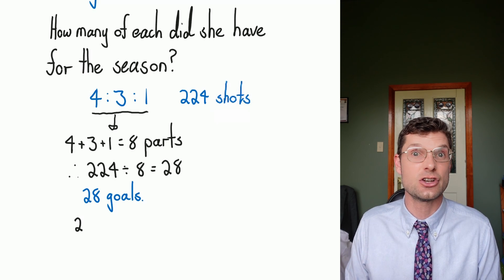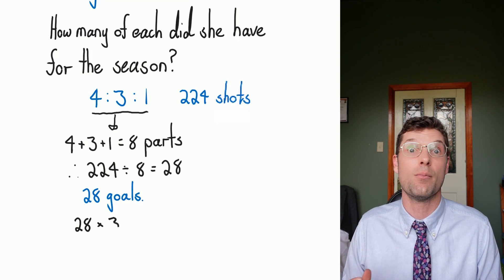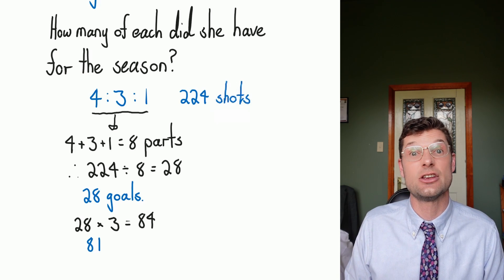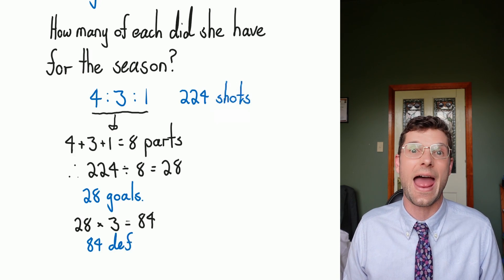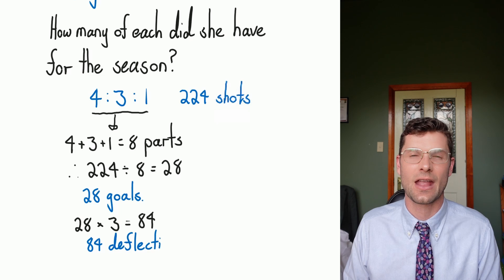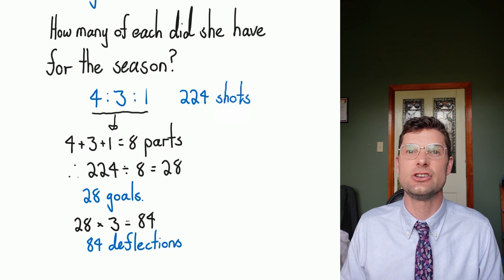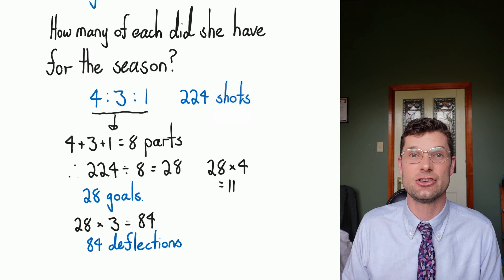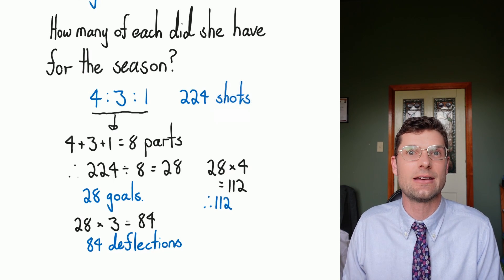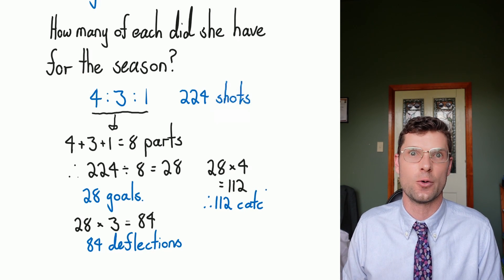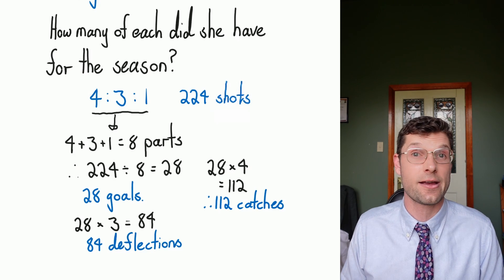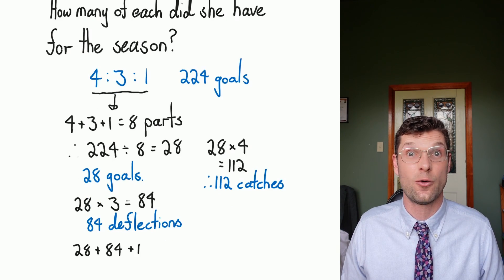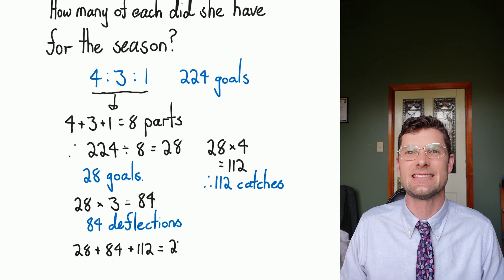Now if I'm looking for my deflections, I've got 28, one part, multiplied by 3. 28 multiplied by 3 is 84, and that's how many shots were deflected out of bounds as they came into the goalie. Finally, we've gotta work out how many she caught cleanly. 4 times 28 is 112, and that is how many she caught. What we've gotta check is that these three numbers add up to that 224 we started with. Again, I would just do this on your calculator, but 28 plus 84 plus 112 equals 224. Big tick, we know we got this answer right.